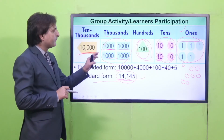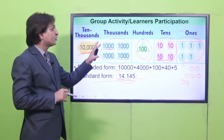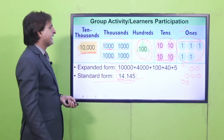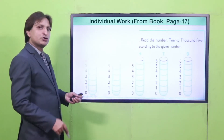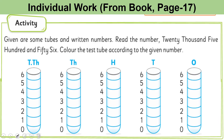I hope you can now recognize the place value of a particular digit in a given number. Students, there is an activity in your book on page number 17. The instruction is: given some tubes and written numbers, read the number 20,500 and 56, and color the test tube according to the given number.